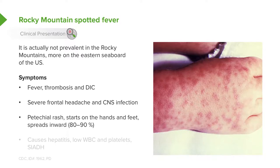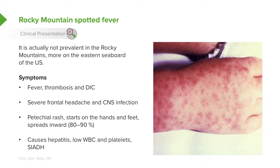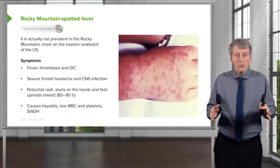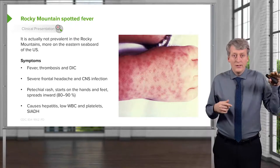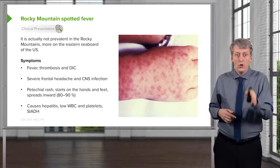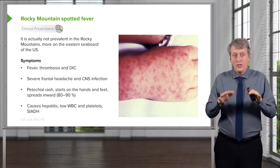What's key is the rash — it will be a petechial rash. It generally starts on the hands and feet and then spreads inward; this happens 80% to 90% of the time. There are several classical lab findings with Rocky Mountain spotted fever: a low-level or high-level hepatitis, a low white count, low platelets, and these patients may get SIADH or hyponatremia. So: petechial rash spreading from hands and feet inward, retroorbital eye pain, hepatitis, low white cells, low platelets, low sodium — if you see this picture, be concerned about Rocky Mountain spotted fever.